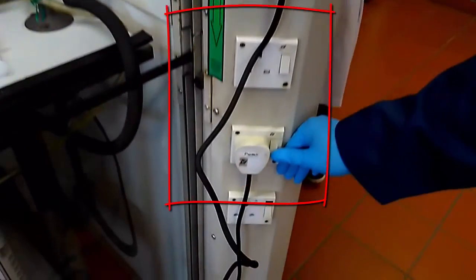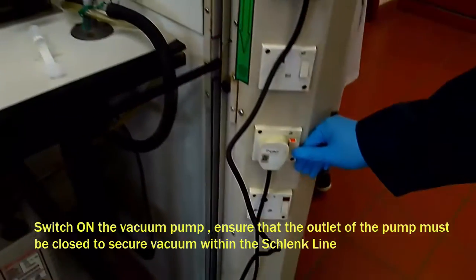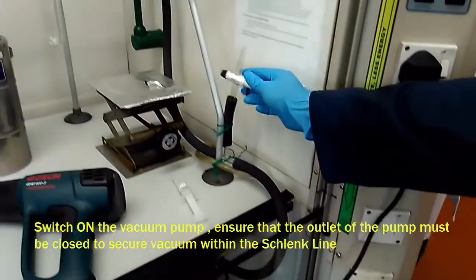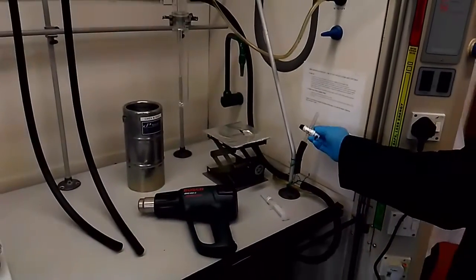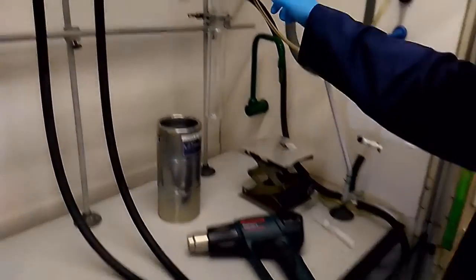So first of all, you're going to turn on the switch for the pump. And the outlet for the pump must be closed so that you can secure vacuum inside the Schlenk line. You see now the pump is connected to the system here. You see it's under vacuum.